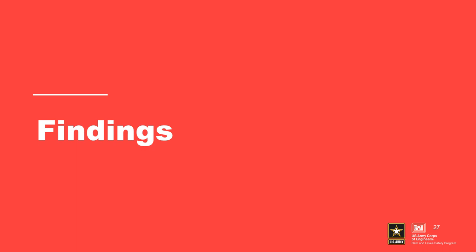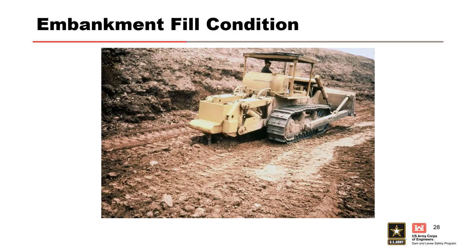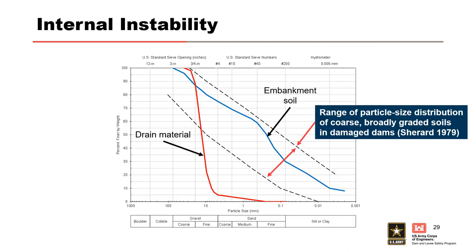The next few slides will discuss the findings of the investigation. The embankment fill was found to be near optimum water content and well compacted. A ripper was required to be used to assist the excavation for the quick breach. During the investigation, it was found that the embankment fill was internally unstable, with fines and fine sands washing out of the embankment, leaving coarse sand and gravel behind. The embankment soils fall within Sherrard's bands of gradation envelopes of unstable broadly graded soils.